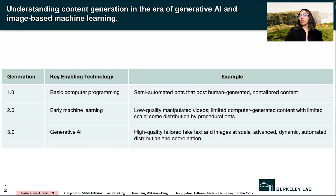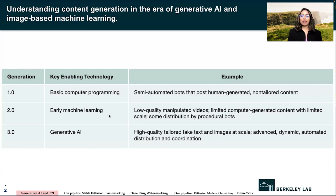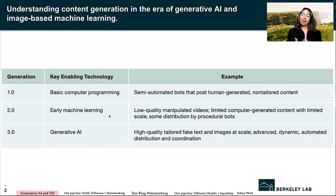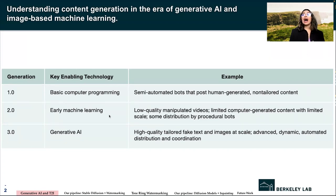This first slide shows how this field has progressed — starting with basic computer programming, like automated chatbots with non-tailored content, then developing into early machine learning with low quality manipulated videos and distribution by procedural bots. Now we're in generative AI, which produces high quality tailored fake text and images at scale.